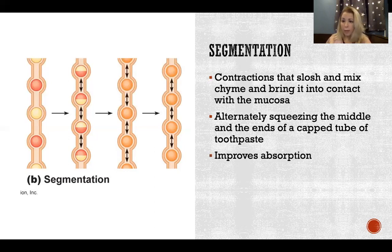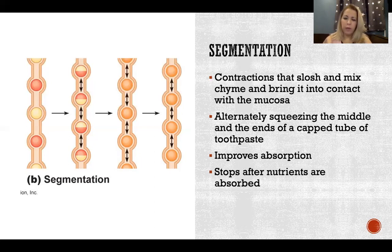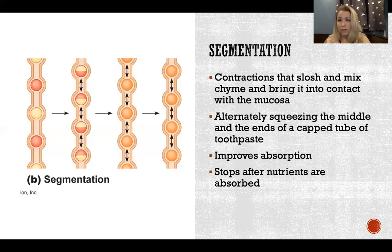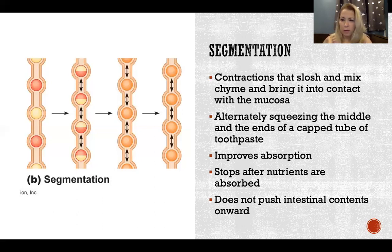Segmentation happens throughout the length of the small intestine. It improves chemical digestion, breaks the food down mechanically to some extent, and increases contact with the wall to improve absorption. Segmentation stops once nutrients are absorbed, and then those contents continue to move down the length of the intestines. Segmentation does not push intestinal contents onward.